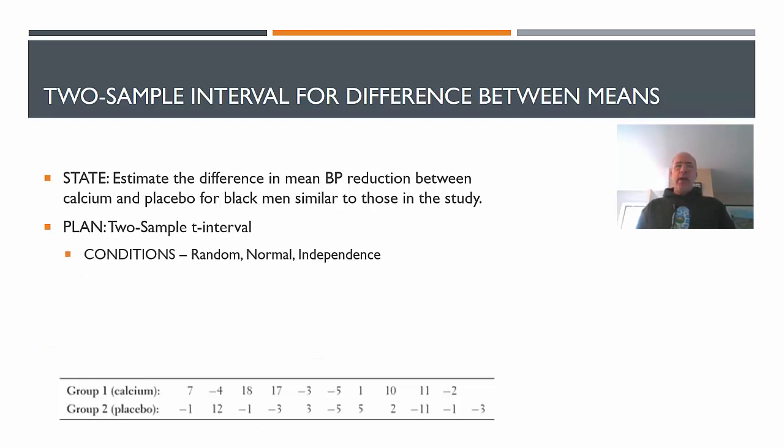The plan for the two-sample T-interval is similar to that. In fact, the same as it is for the hypothesis test. We need to check the randomization, normality, and independence. And fortunately here, those are the same conditions as the hypothesis test. So I won't go through them again. But for the conditions, you would have to write these all down if you were just doing the confidence interval problem. And do make sure you write down this is a two-sample T-interval that we're doing here.